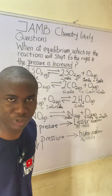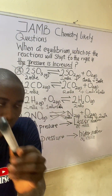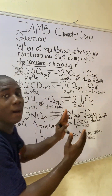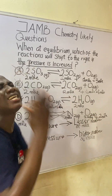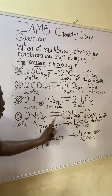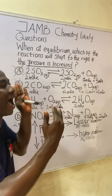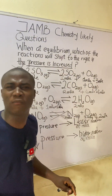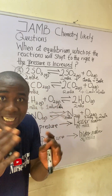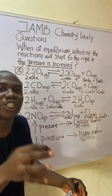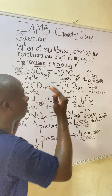For option D, pressure will not affect this reaction. It is because both the product and the reactant — both the right and the left — had equal number of moles: two moles on each side. Whenever you check a reaction and both sides have equal number of moles, pressure will not affect that reaction.